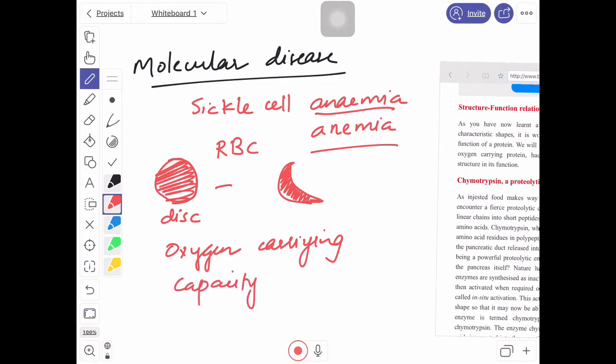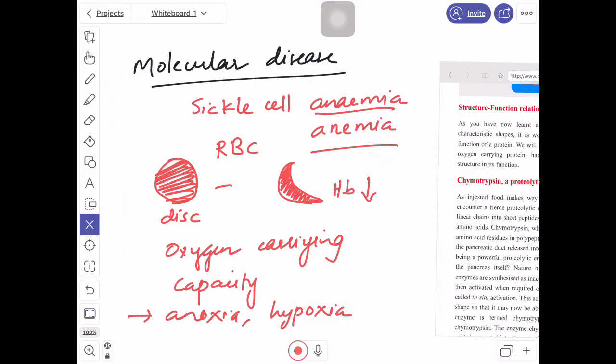The reason is the number of hemoglobin will be less compared to disc shaped, and these patients will suffer from anoxia or hypoxia. Now the reason for this disease is some molecular reason, and the molecular reason will be discussed here in today's class.